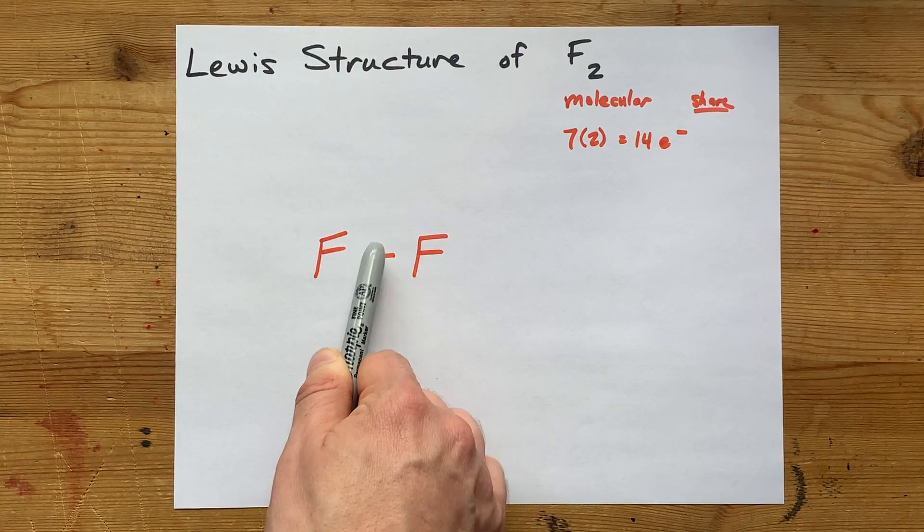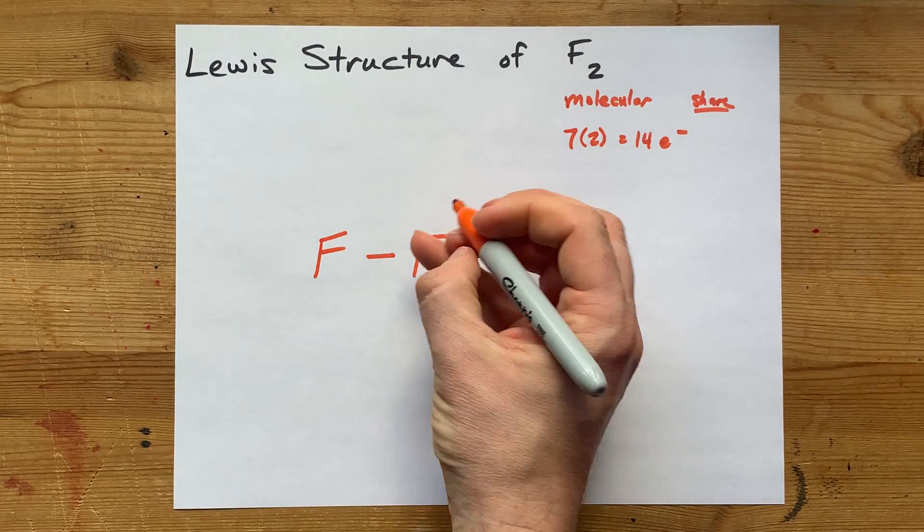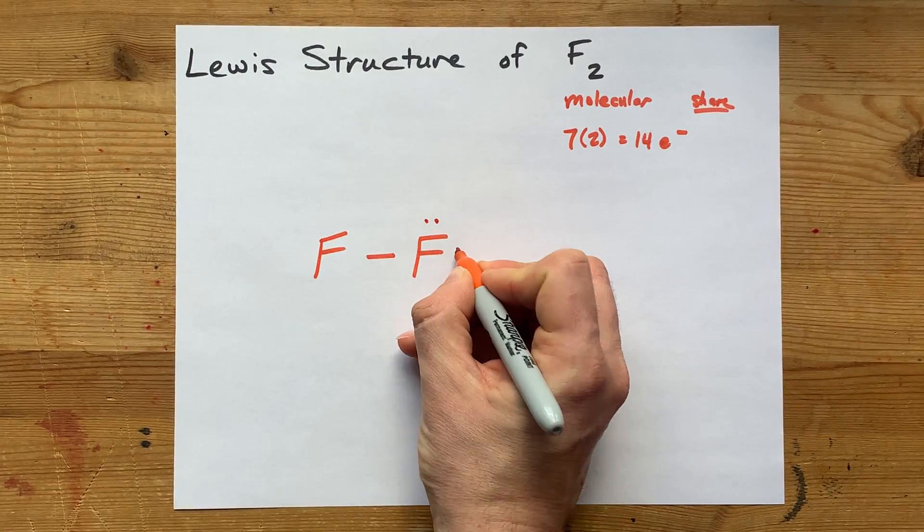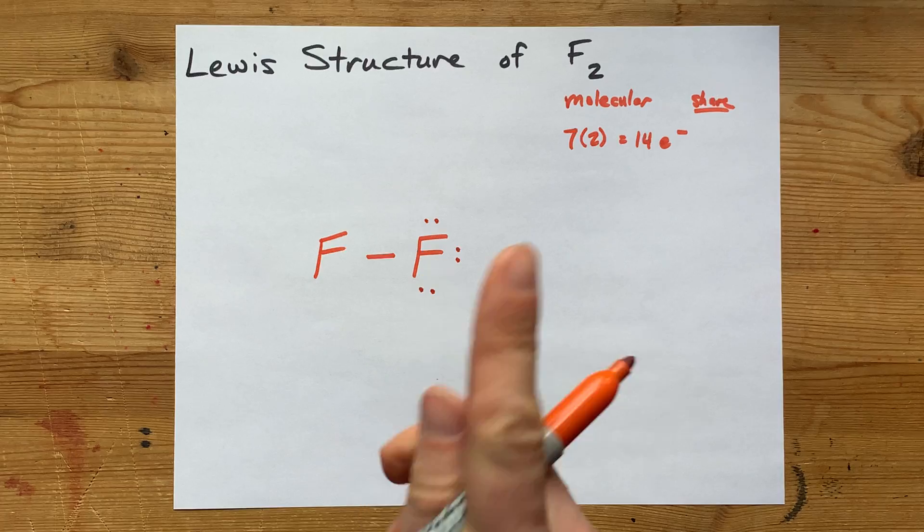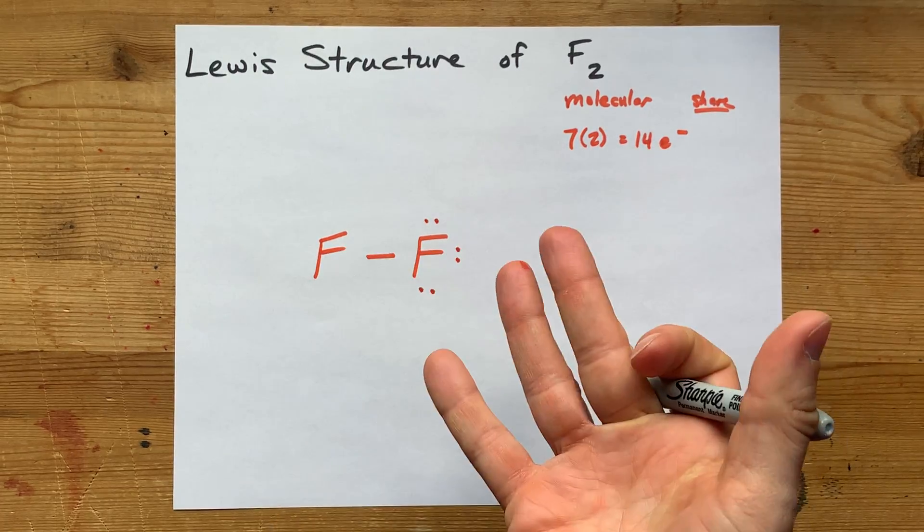Fluorine, this one, has two electrons around it already, so let's do 3, 4, 5, 6, 7, 8. That's eight electrons for that fluorine.